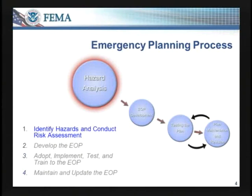First we're going to start with the emergency planning process. Hazard analysis is where we start — this is going to be our roadmap of how we will work today. We start with the hazard analysis, identifying those hazards, and then from that we can develop our emergency operations plan, test and train on the plan, and then work on plan maintenance and review.